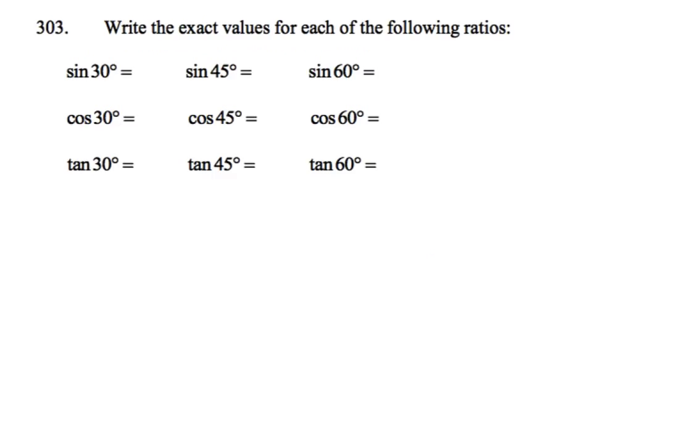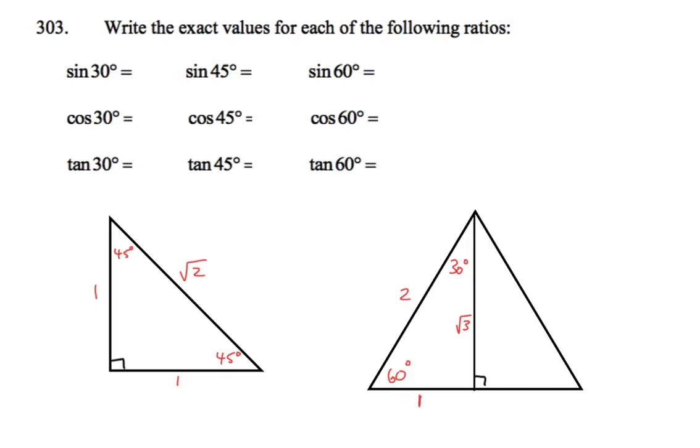Exact values for the following ratios. I'd be writing this out for myself and then just piecing this together. Sine 30. We're looking at from the 30 here. Sine is opposite over hypotenuse, so I think we'd piece together that's one over two. Sine 45, we go to the 45 triangle, is opposite over hypotenuse. I think is one on root two.